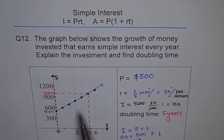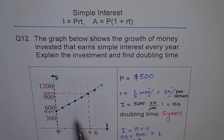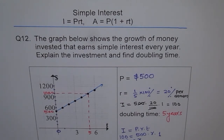That said, the points could be connected because you would be paid interest even if you withdraw your money before the end of the year. It depends on policy, but in general, at 20 percent per annum, if you take the money out halfway through the year you get interest for half the year — so instead of $100 you may earn $50.